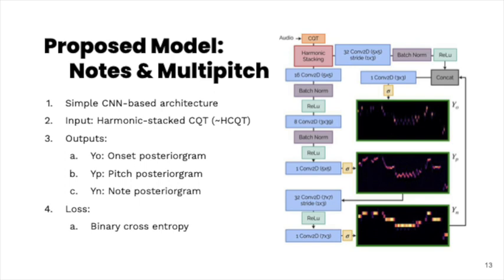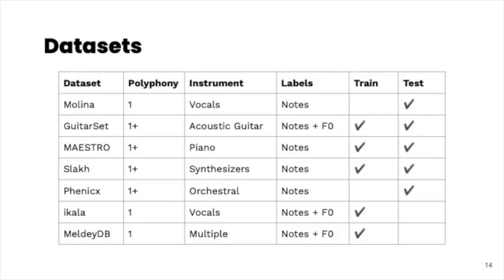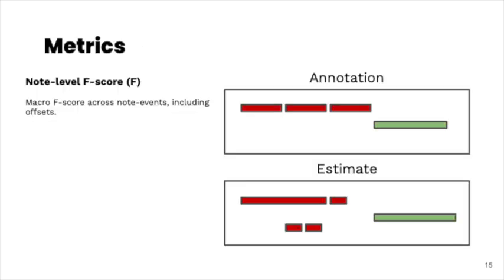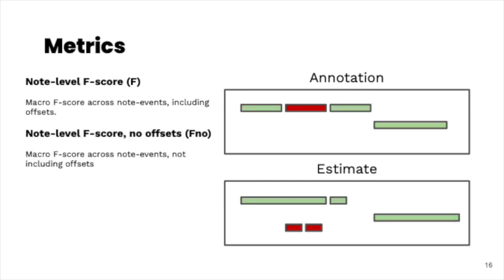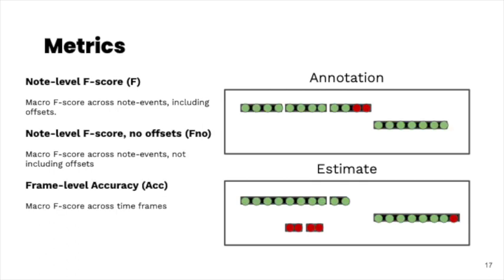These three outputs are trained jointly using a binary cross-entropy loss. We train and test NMP on a wide variety of open source datasets which span many different instruments and musical genres. We evaluate note event accuracy using three metrics. Note-level F-score is computed across note events, where notes are considered matching if they have the same pitch and if both the onsets and the offsets are within a tolerance window of one another. The second metric is similar but notes may match even if their offsets do not align. Finally, frame-level accuracy is the macro F-score across notes broken down into evenly spaced timeframes.